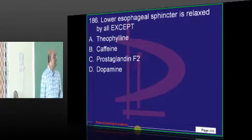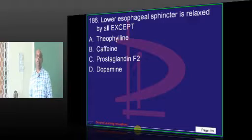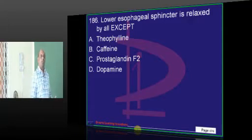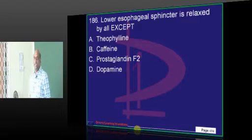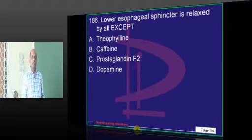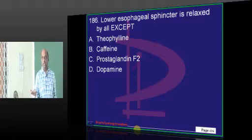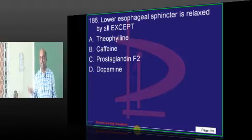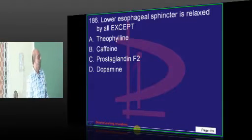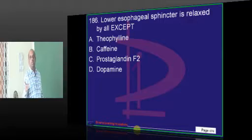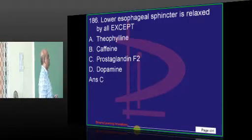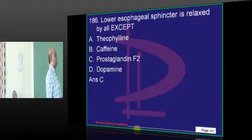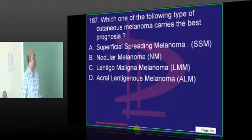Lower esophageal sphincter is relaxed by prostaglandin E2. What will F2 be doing? I am thinking F2 - I may not be right, I did not do much homework. F2 is a possibility; it looks evidently appearing, but I need to recheck this answer.